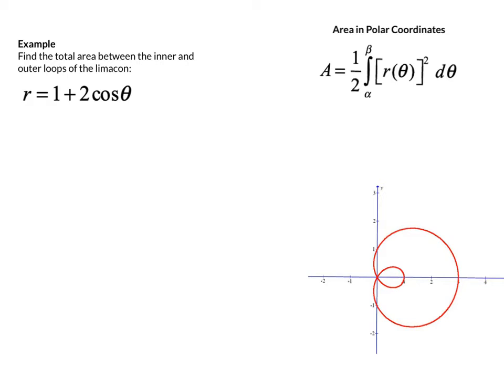In order to do that, we're going to use the formula for the area enclosed by a polar function. This is derived from the area of a sector of a circle, one half r squared theta. Here, r is not a constant, it's a function of theta, and it can get longer or shorter. So we integrate that from alpha to beta, the bounds of the curve in theta. We have one half integral from alpha to beta of r squared d theta.